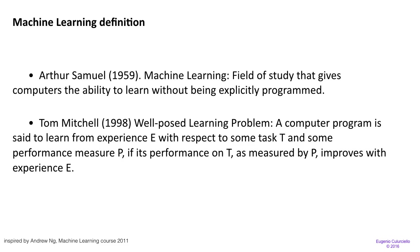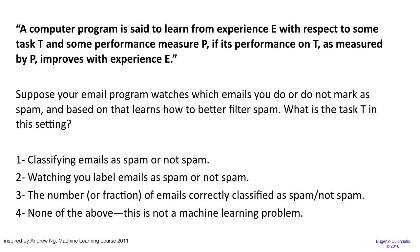Tom Mitchell, more recently in 1998, said: a computer program is said to learn from experience E with respect to some task T and some performance measure P, if its performance on T as measured by P improves with experience E. This is a more measurable definition — you can measure performance on a specific task, and by giving more data and more experience to the computer, if it improves, then the machine has learned.